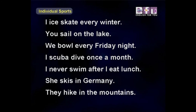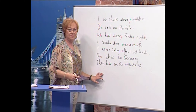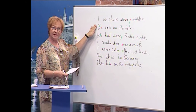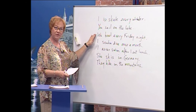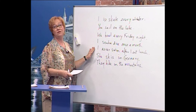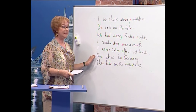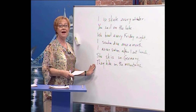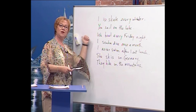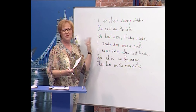And finally: 'They hike in the mountains.' So to summarize the simple present examples: I ice skate every winter. You sail on the lake. We bowl every Friday night. I scuba dive once a month. I never swim after I eat lunch. She skis in Germany. They hike in the mountains. These mean the same as using 'go + sport + ing' — just a different way to say it.